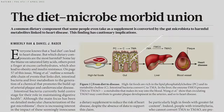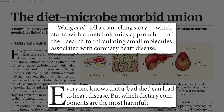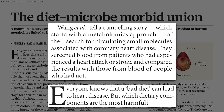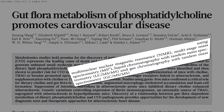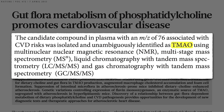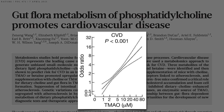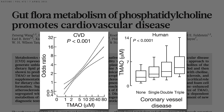Metabolomics is where the story of TMAO started. Everyone knows that a bad diet can lead to heart disease, but which dietary components are the most harmful? Researchers at the Cleveland Clinic screened blood from patients who had experienced a heart attack or stroke, and compared the results with those from blood of people who had not. Using all sorts of fancy technology, they identified a compound called TMAO, which stands for trimethylamine oxide. The more TMAO people had in their blood, the greater the odds they had heart disease, and the worse their heart disease was.